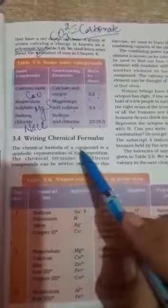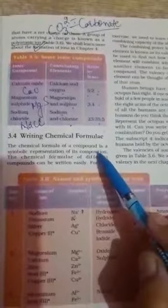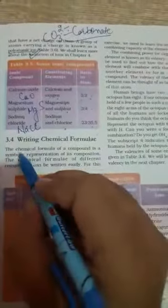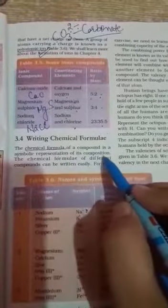So next is how to write down the chemical formula. The chemical formula of a compound is a symbolic representation of its composition. This is the definition of chemical formula. What is a chemical formula? It is a symbolic representation of its composition.